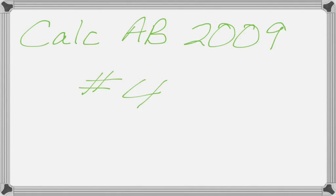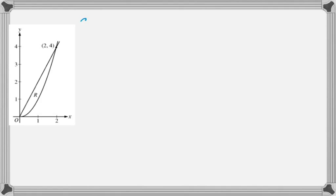Alright, this is number 4 from the 2009 AB exam, and it's pretty much the basic area volume question. You've got to be prepared for these, because there's pretty much one every single year. This one happens to be non-calculator.